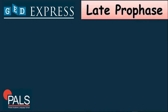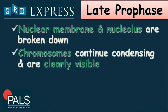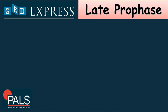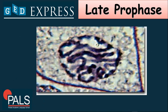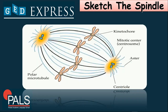During late prophase, the nuclear membrane and nucleus are broken down, and the chromosomes continue condensing and are clearly visible. During this time, the spindle finishes forming between the poles of the cell. We have here this photo wherein the nucleus has disintegrated and you can see the chromosomes. The spindle fiber is like the line you can see here. We also have the centrioles — those boxes — and the one in the center would be the chromosomes.